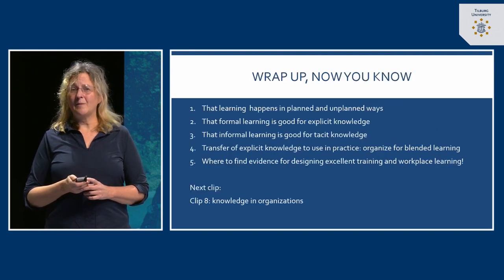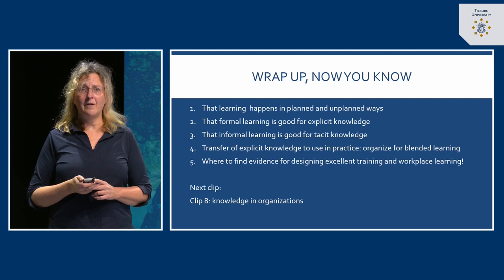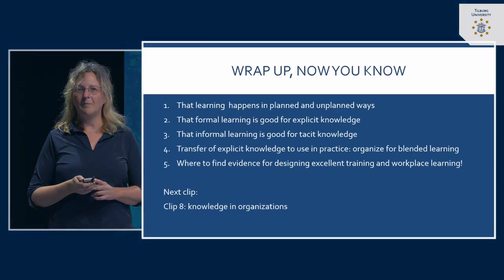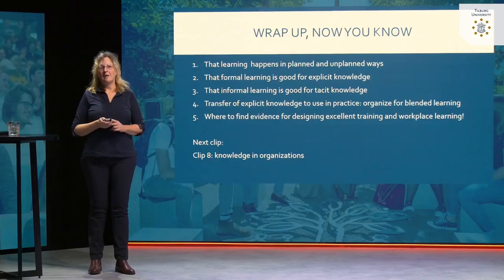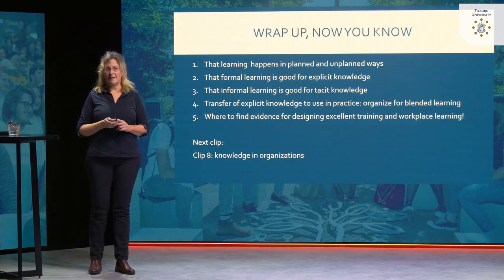This brings me to the end of this clip. Now you know that learning happens in planned and unplanned ways. That formal learning is good for acquiring explicit knowledge. That informal learning is good for acquiring tacit knowledge. That the transfer of explicit knowledge to use in practice needs to be organized — you need to organize for blended learning. And you also know now where to find evidence for designing excellent training and workplace learning.